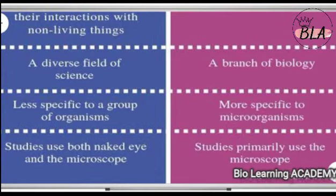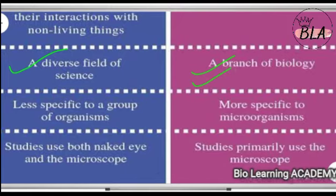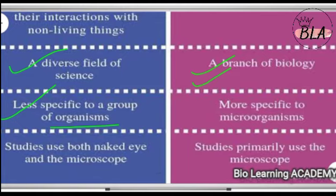Biology is a big and diverse field of science. Microbiology is a small part of biology — there are other branches and fields, but microbiology is specific to a particular group or species of organisms. While biology talks about all species, microbiology is more specific to microorganisms.